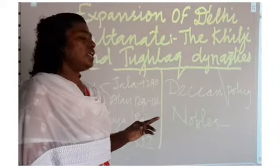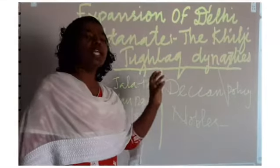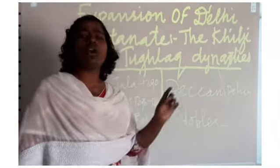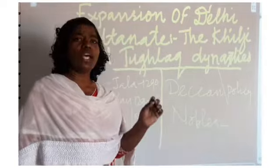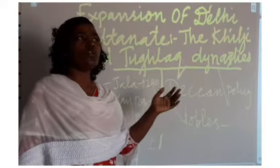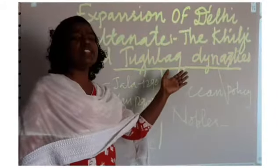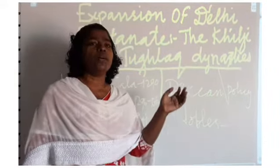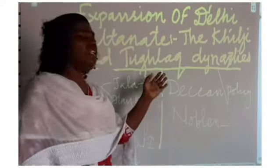In the Tughluq dynasty, Ghiyasuddin Tughluq was the ruler. He was also an ambitious ruler and a good army commander. He established different policies to establish his kingdom in India. After Ghiyasuddin, the one who came into power was Muhammad bin Tughluq.